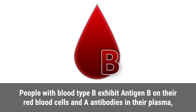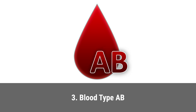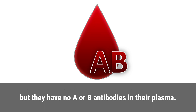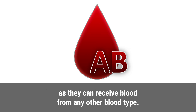Blood type B individuals' immune systems recognize antigen A as foreign. Individuals with blood type AB have both antigen A and antigen B on their red blood cells, but they have no A or B antibodies in their plasma. This unique blood type is considered the universal recipient, as they can receive blood from any other blood type.